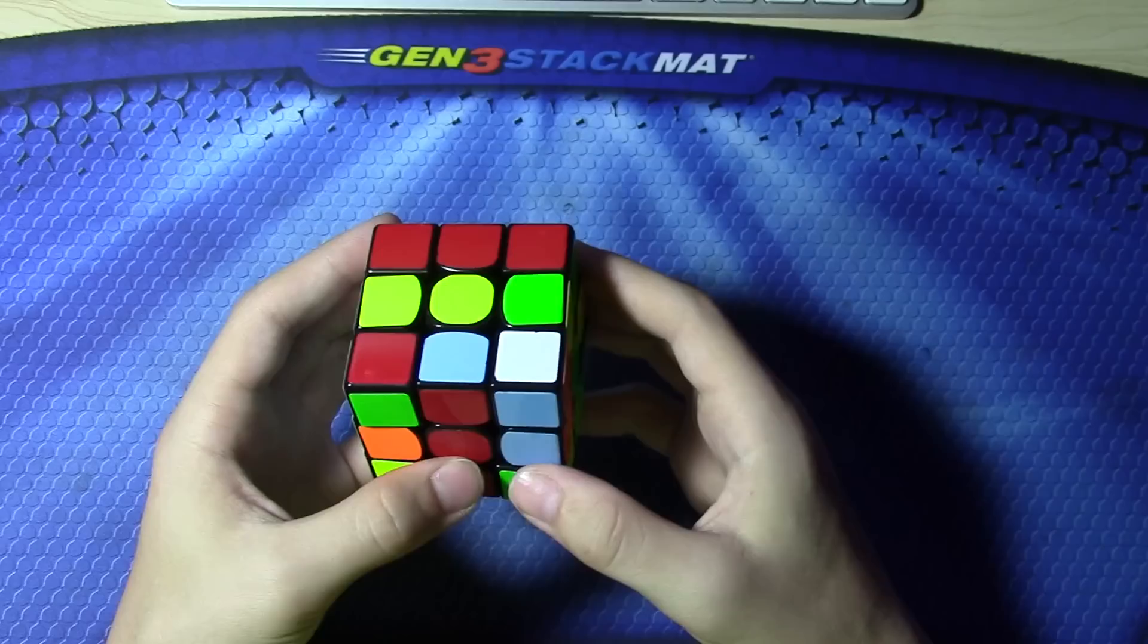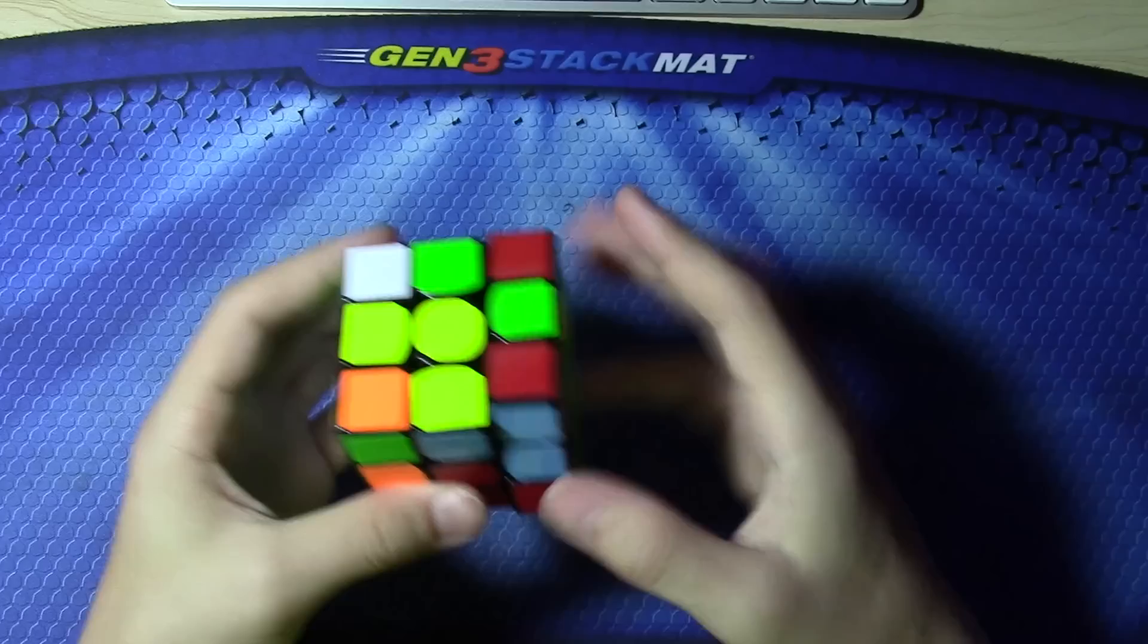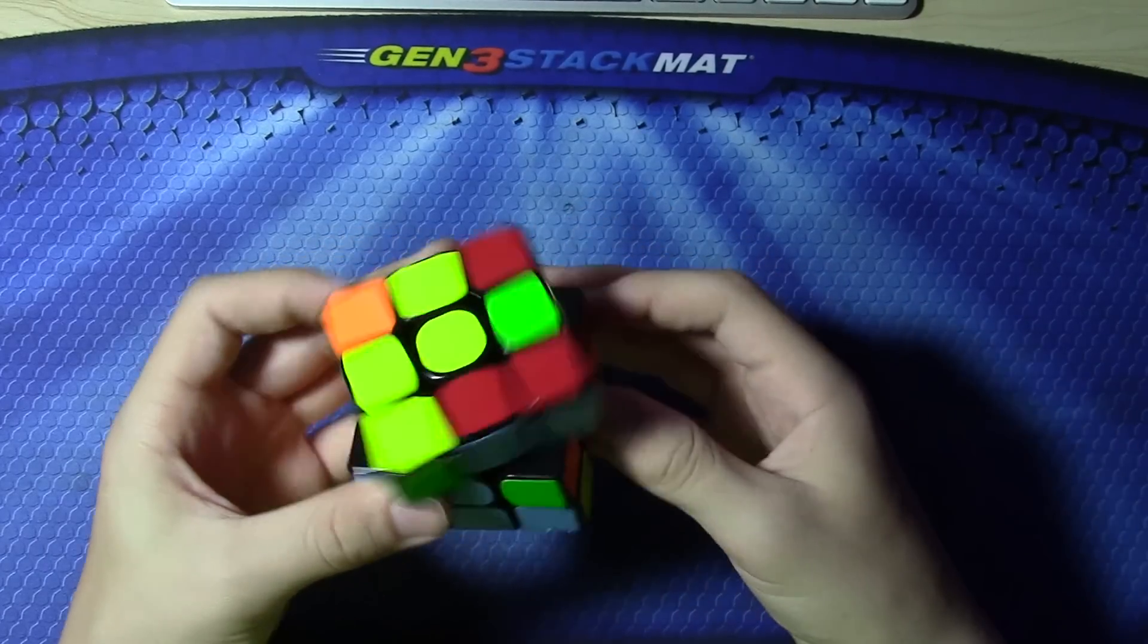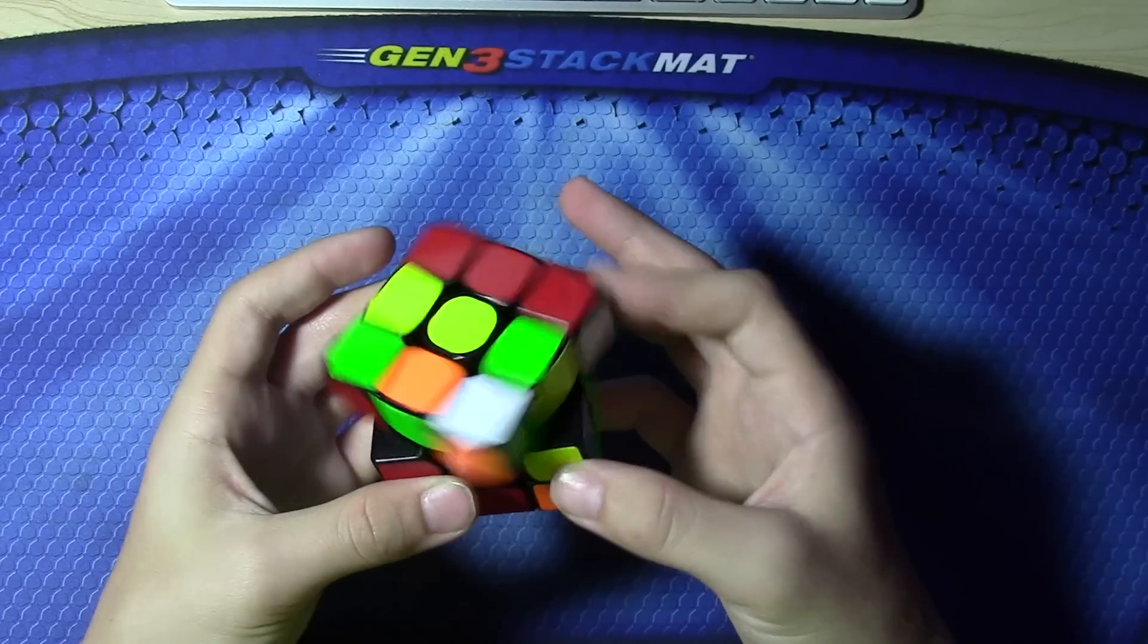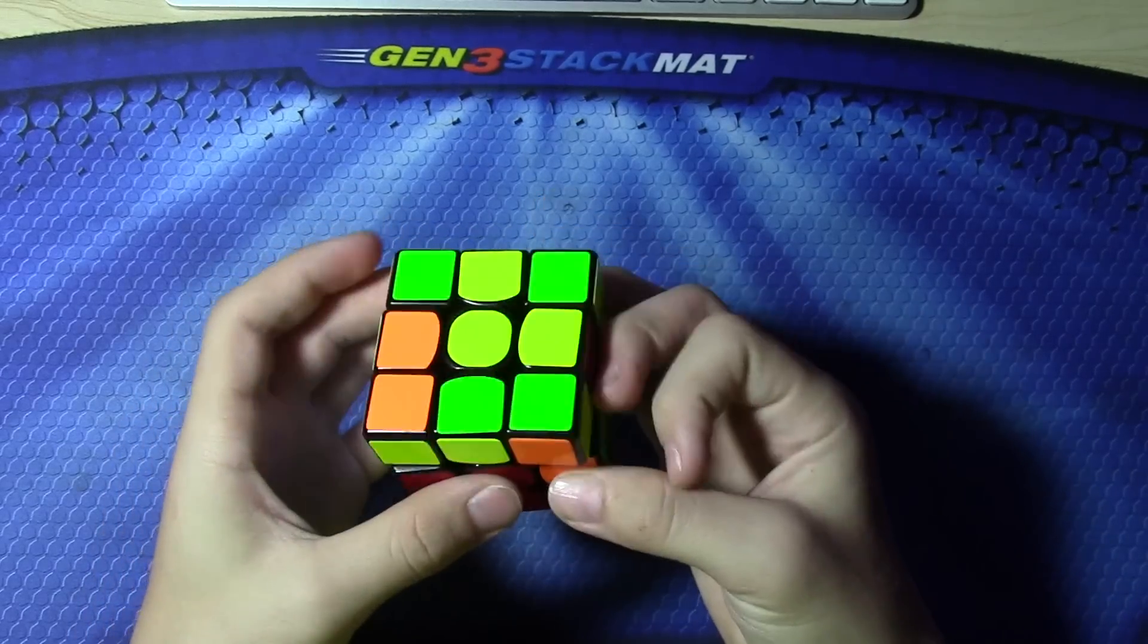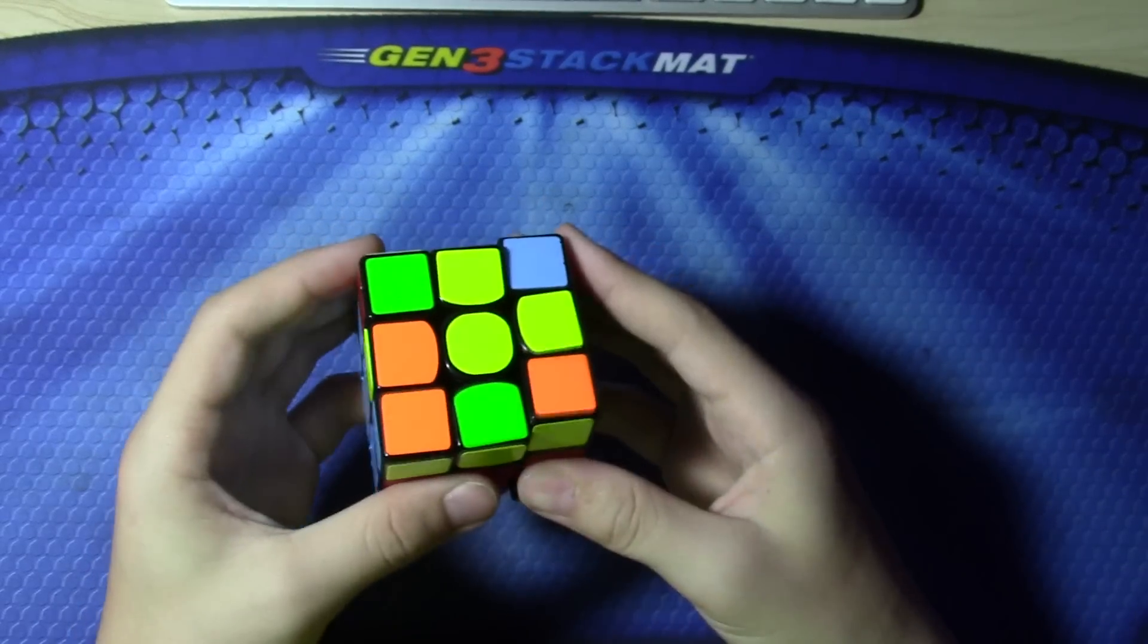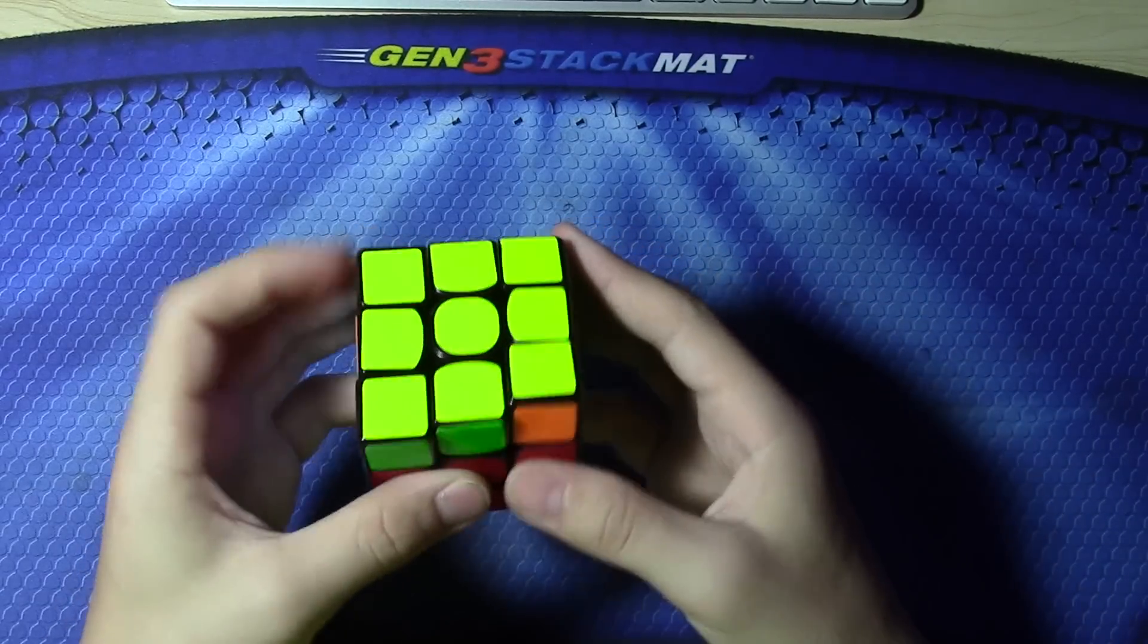Obviously, first thing I see is this pair. And then this pair, and then this pair, then this, and then this pair. Now, OLL, T perm.